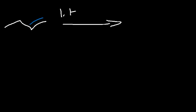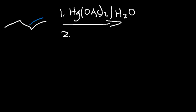In this video, we're going to talk about the oxymercuration-demercuration reaction. Consider this particular alkene. We're going to react it with mercuric acetate with water, and in the second step, in a separate reaction, sodium borohydride. What do you think the major product of this reaction is going to be?